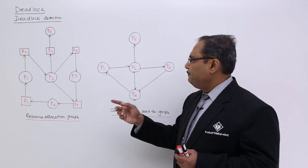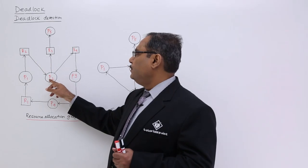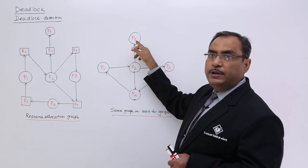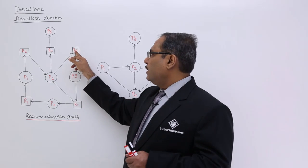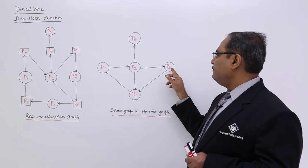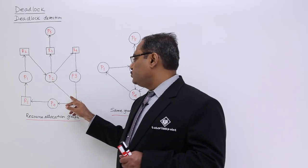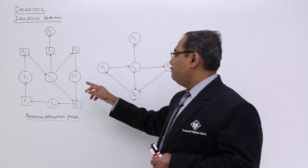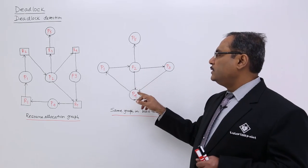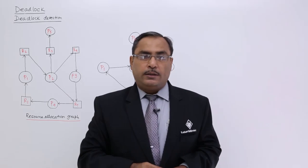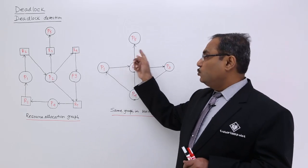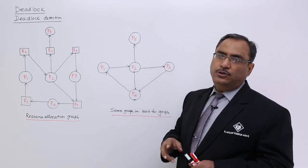Now for P2: P2 has got R2 but is waiting for R3 — R3 is allocated to P5, so P2 is waiting for P5's completion. P2 is also waiting for R4, which is allocated to P4, and waiting for R5, which is also allocated to P4. So P2 is waiting for P4's completion as well. That means three outward edges are coming out from P2. This is the respective wait-for graph, depicting who is waiting for whom.